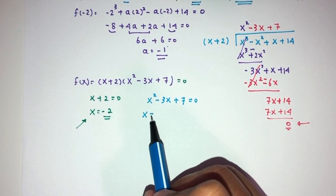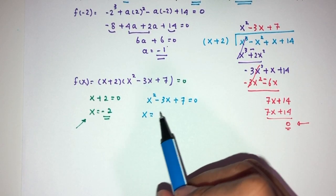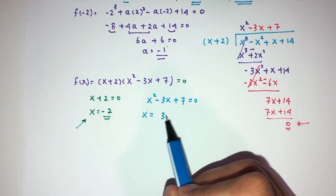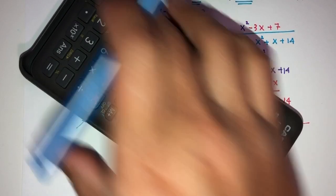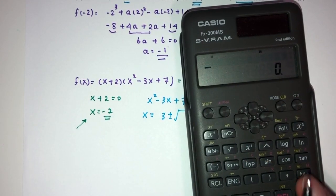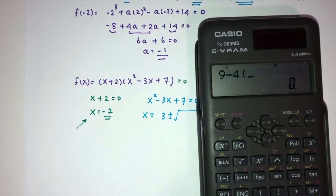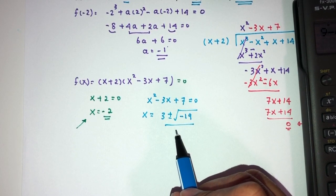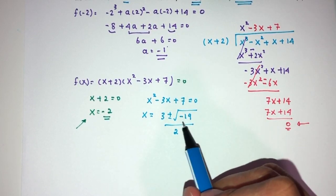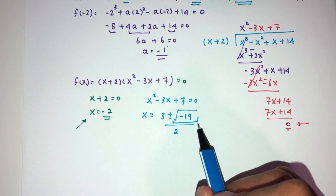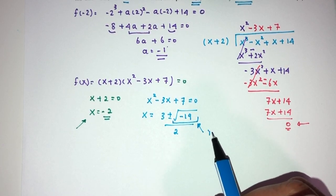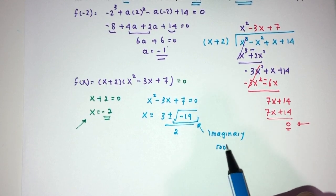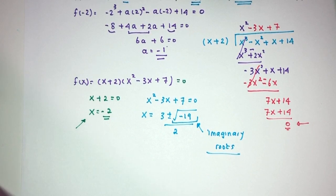Here you will have x squared minus 3x plus 7 equals 0. x could be found by using your formula. You will have minus b, that will be 3, plus minus b squared minus 4ac. That will be b squared is 9 minus 4 times a times c, that will be minus 19, divided by 2a which is 2. You can see it shows that it is imaginary root. This is why we only have one real root.